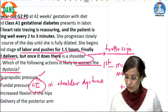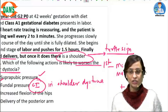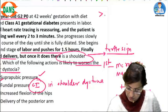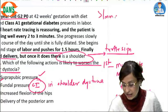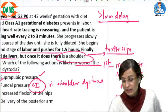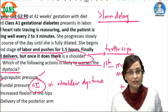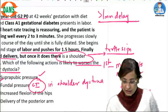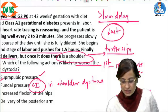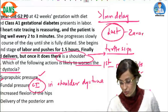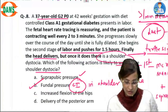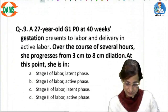Shoulder dystocia is described as more than one minute delay in the delivery of the shoulders after delivery of the head. The last resort for shoulder dystocia is the Zavanelli maneuver, where you push the head back and deliver the patient by cesarean section.